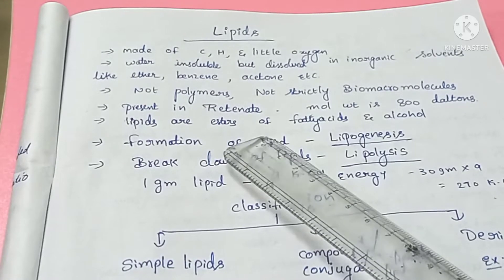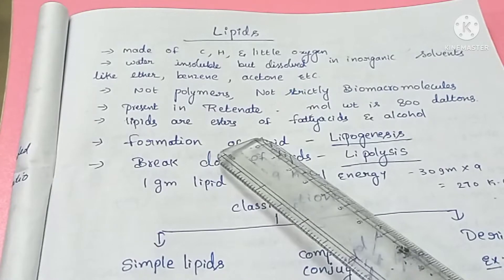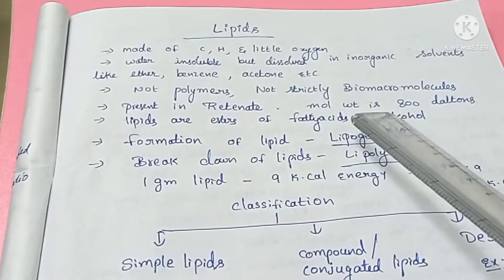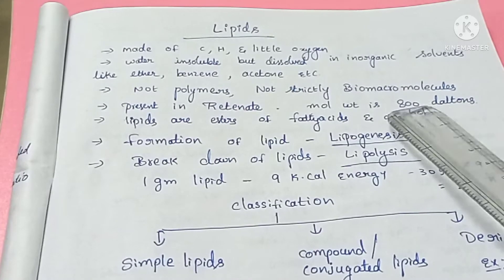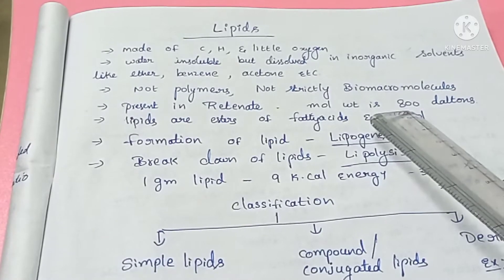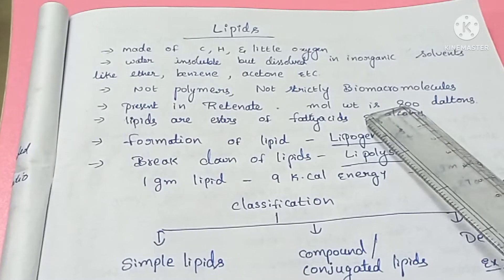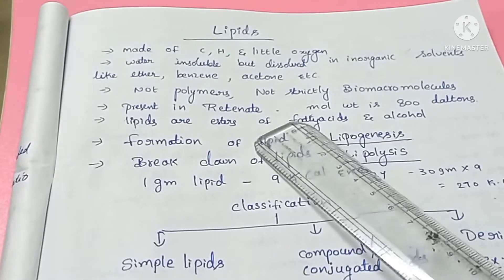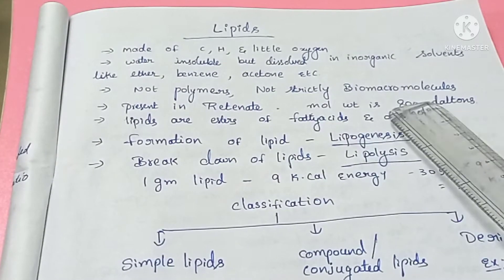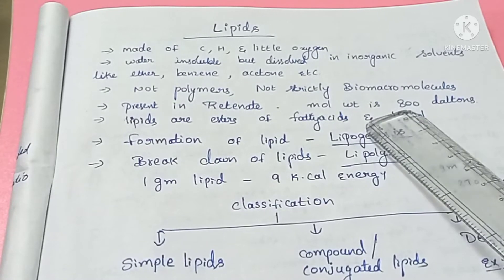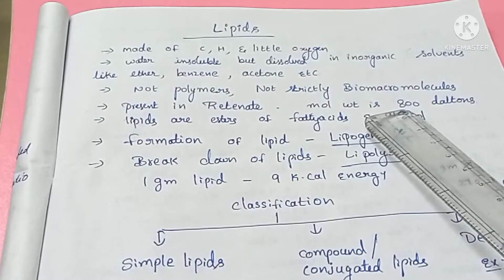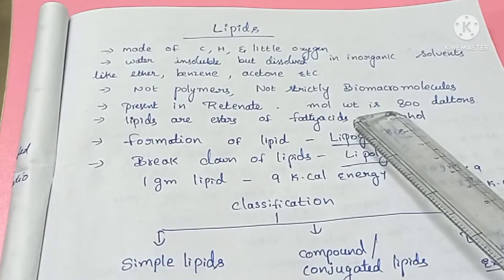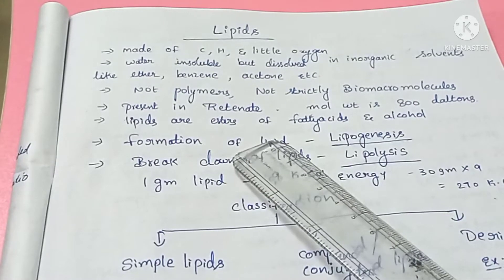Lipids have a molecular weight of about 800 Daltons, but they are collected in the retinates, so they are considered biomacromolecules. Lipids form vesicles in cells like cell membranes or cell organelles. They are dissolved in retinates, so they are biomacromolecules but not strictly so, as per molecular weight.